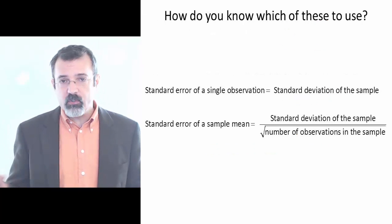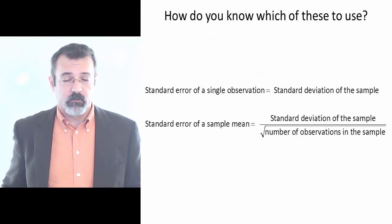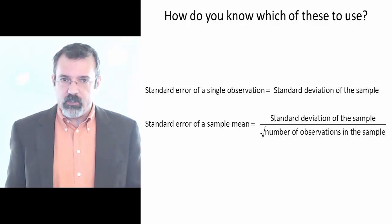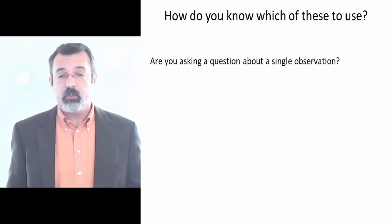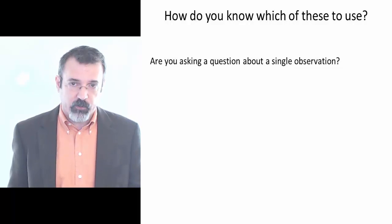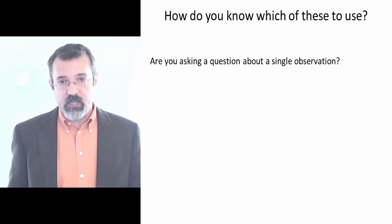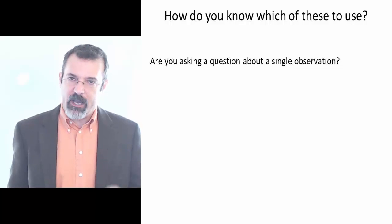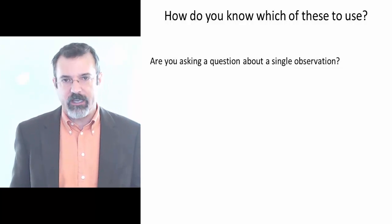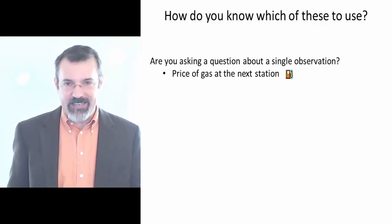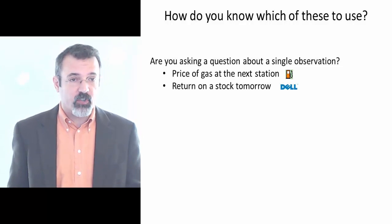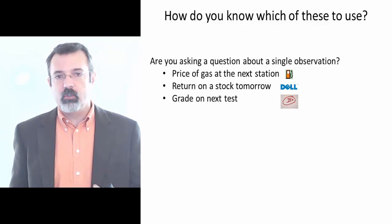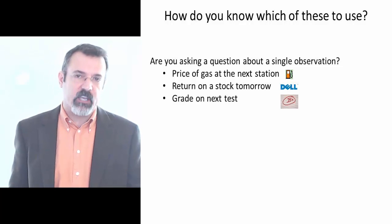So the question is, how do you know which of these two confidence intervals to use? To answer that, you need to know whether you're asking a question about a single observation or about the average of a set of observations. If you're asking about a single observation, then you're asking questions like: what is the price of gas at the next gas station? Or what is the return on a stock tomorrow? Or what is the grade that you'll get on the next test you take?